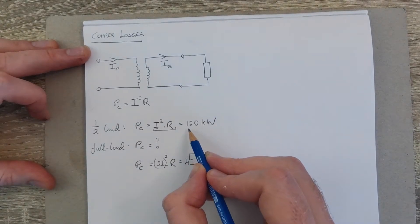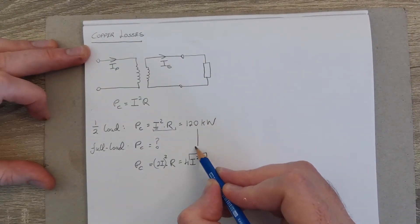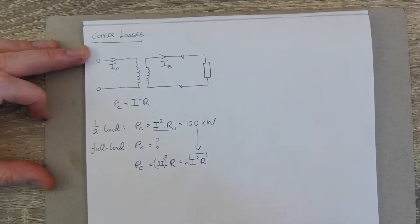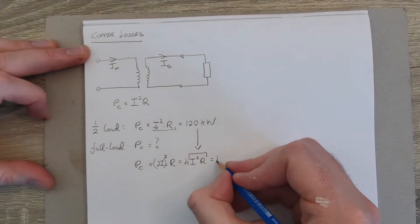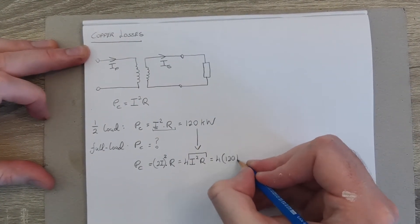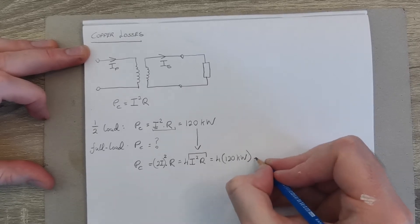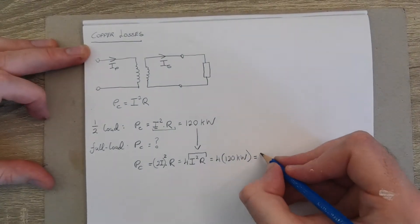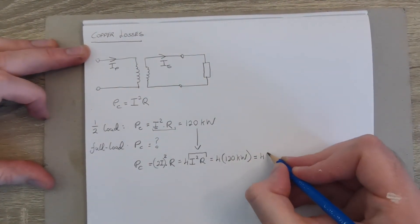It's this value here, so we can put this in for I squared R and we get 4 times 120 kilowatts, and we're left with 480 kilowatts.